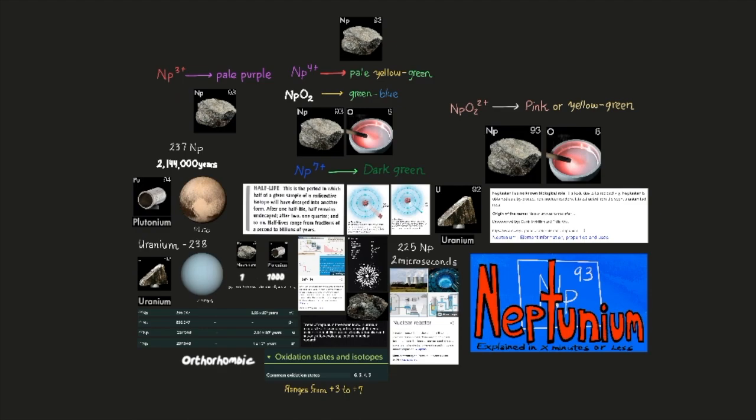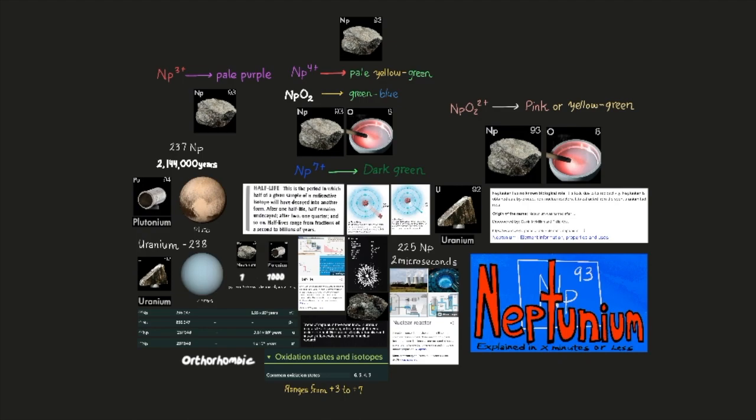Neptunium has been produced in weighable amounts in nuclear reactors. In breeder reactors, it is a byproduct of plutonium production from uranium-238. About one part neptunium is produced for every 1,000 parts plutonium. All neptunium isotopes are radioactive. The stablest is neptunium-237 with a half-life of 2,144,000 years. And among the most unstable is neptunium-225 with a half-life of more than 2 microseconds.